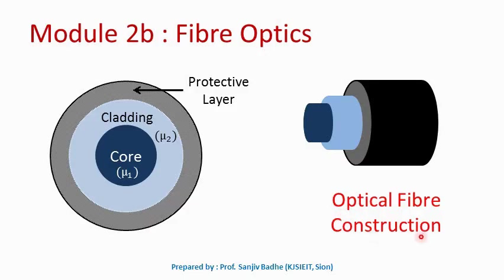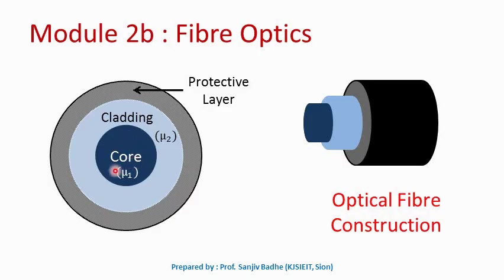If you look at the construction of the optical fiber, we can see three coaxial layers. The innermost layer is called the core, which has the refractive index mu1. Then we have a layer called cladding having the refractive index mu2. At the end there is one protective layer, because the inner layers — core and cladding — are made up of plastic or glass, which are fragile in nature. The protective layer will protect them from getting damaged. The light waves actually travel through the core.